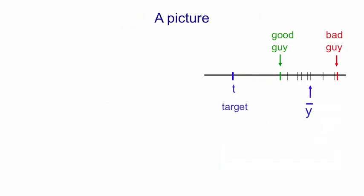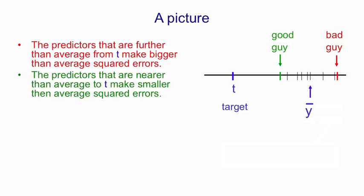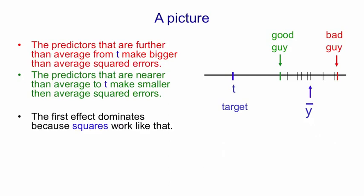I want to show you that in a picture. Along the horizontal line, we have the possible values of the output. In this case, all of the different models predict a value that's too high. The predictors that are further than average from t make bigger than average squared errors, like that bad guy in red. And the predictors that are less than the average distance from t make smaller than average squared errors. And the first effect dominates because we're using squared error.